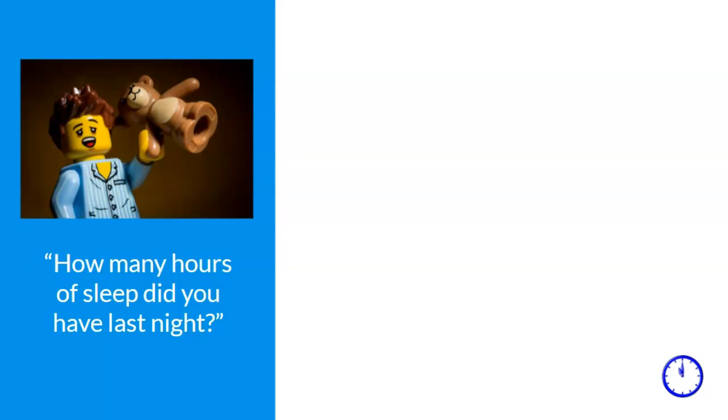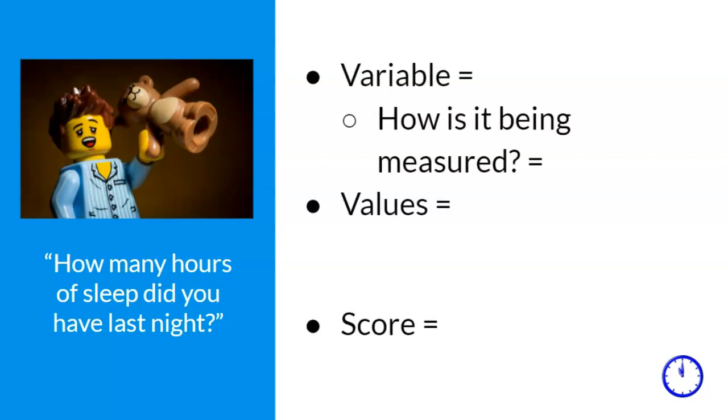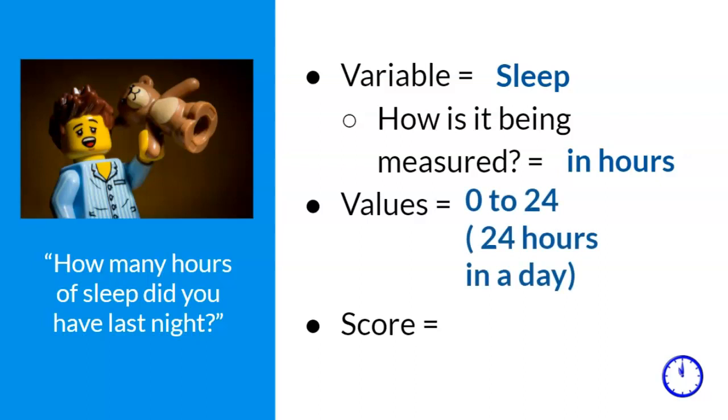Let's do a practice example together. The researcher wants to know, how many hours of sleep did you have last night? What will be the variable, values, and score? The variable is sleep. Now, how is sleep being measured? Well, the question clearly states hours, so the sleep is being measured in hours. We easily could have said and measured it in minutes, but it's easier to measure it in hours. Recall that values are the possible number that a variable can have. Since the question is asking about your sleep last night, and there are 24 hours in a day, the values will be 0 to 24. It is important to indicate 0 because someone might not have slept at all last night. And finally, what is your score? My score is 7.5 hours that I slept last night.